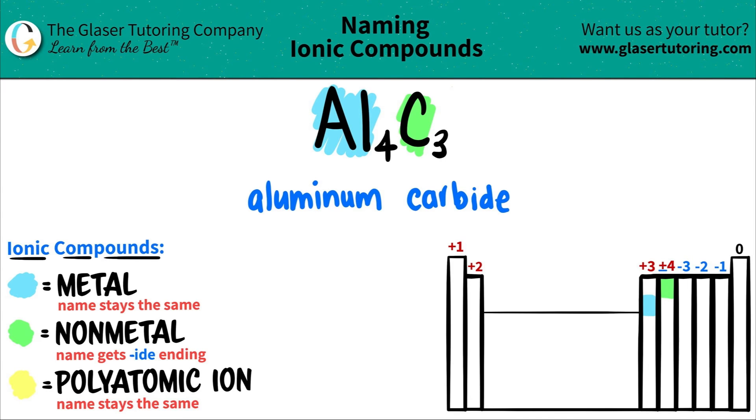And that's it. Al4C3 is just aluminum carbide. Now just make sure—do we really need a Roman numeral for aluminum?